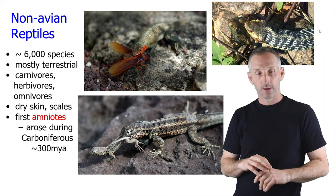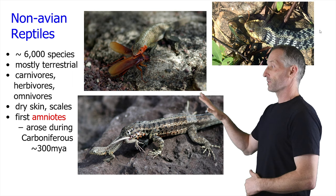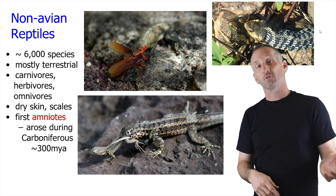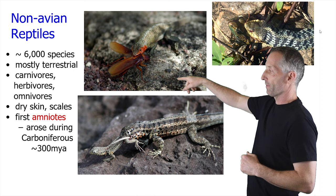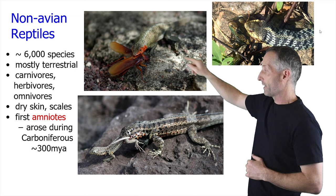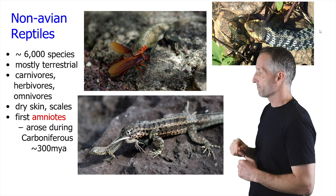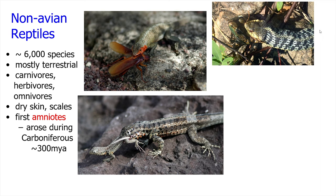There are lots of non-avian reptiles — roughly 6,000 species. They tend to be terrestrial, mostly away from water, though there are some aquatic forms, and they have a diversity of feeding forms including a lot of carnivory. On the upper left is a lava lizard from Galapagos feeding on a cockroach, on the bottom a lava lizard feeding on another lava lizard — cannibalistic. On the upper right is a snake in Quebec eating a frog.